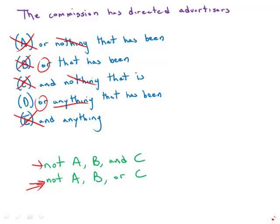And that is in fact the best answer. The commission has directed advertisers to restrict the use of the word 'natural' to foods that do not contain color or flavor additives, chemical preservatives, or anything that has been synthesized. Answer choice D is by far the strongest answer.